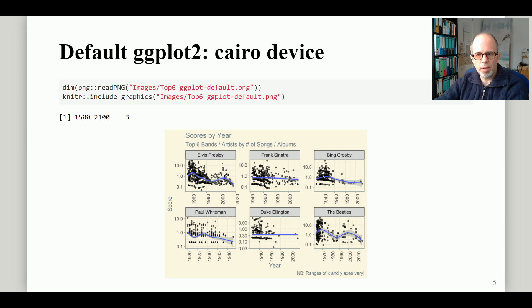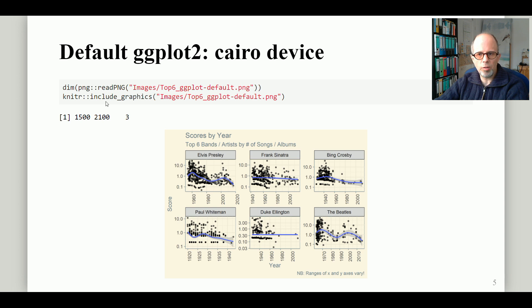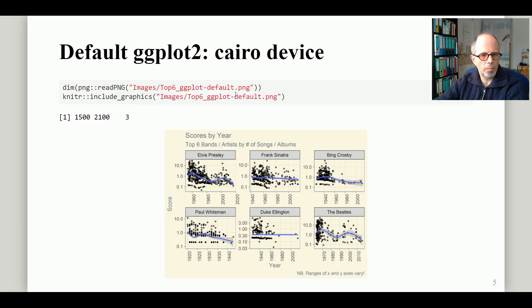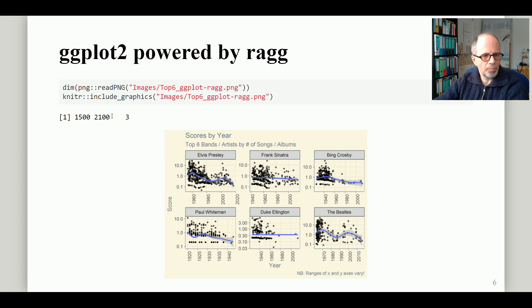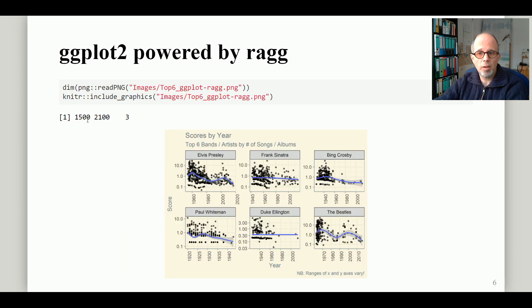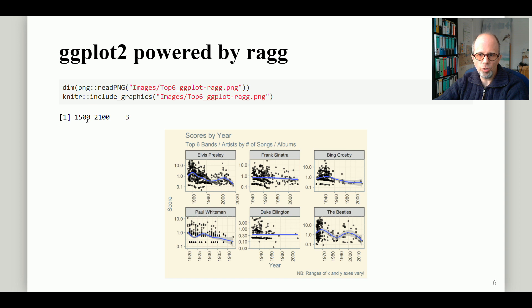Let's have a look at the plots. I can move back and forth between these two slides and you see the plots are exactly the same. Here I include the two graphics that were saved on the previous slide — one is the default png and the other is the ragg-powered plot. I also display the dimensions: 1500 and 2100 are the resolution in x and y direction, and the number three is for three channels — RGB, red, green, and blue. The speed improvement does not mean a loss of quality; we have exactly the same two plots at the same quality.